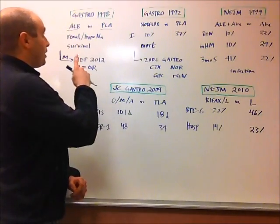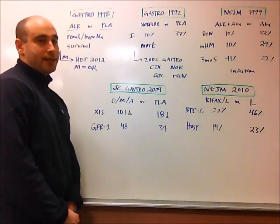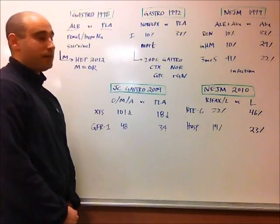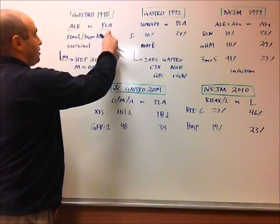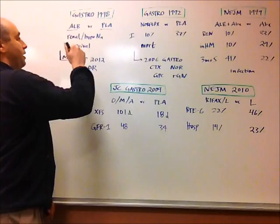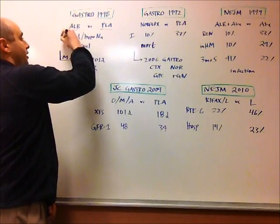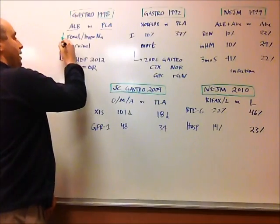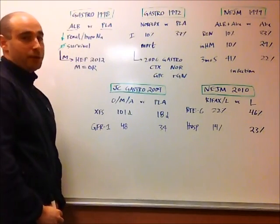The first paper we're going to look at is published in Gastroenterology in 1998, and they looked at cirrhotic patients with ascites who were undergoing large-volume paracentesis and compared placebo to using albumin as a volume expander. They found that in the albumin group, there was decreased rates of renal insufficiency and hyponatremia, although they did not find any difference in survival between the two groups.